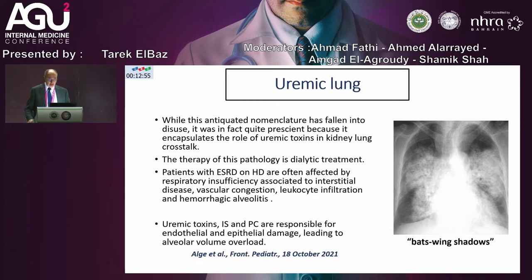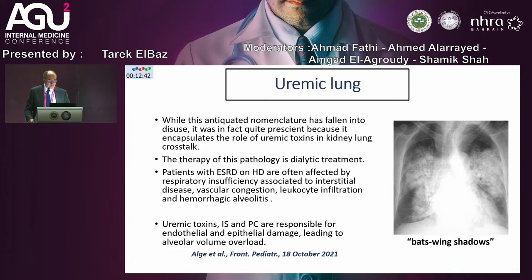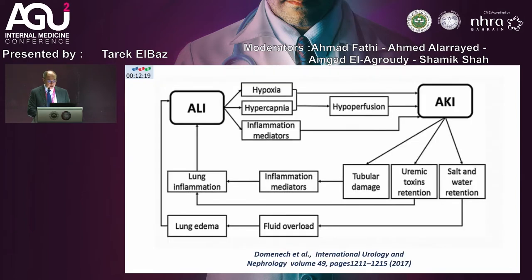Although the term 'uremic lung' is antiquated and has fallen into disuse, it is still very descriptive of what is happening. The classic bat's wing shadows can be seen in the chest radiograph. Patients with this form of injury have respiratory insufficiency associated with vascular congestion, leukocytic infiltration, and hemorrhagic alveolitis. Under the effect of the uremic toxins, these patients would eventually need renal replacement therapy.